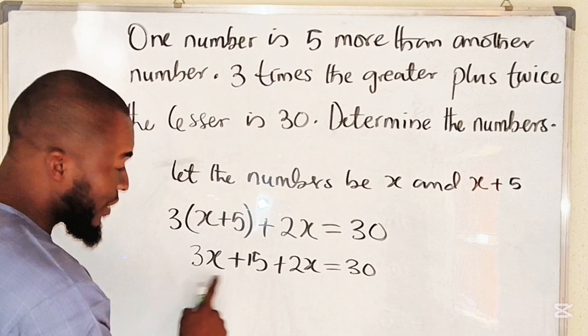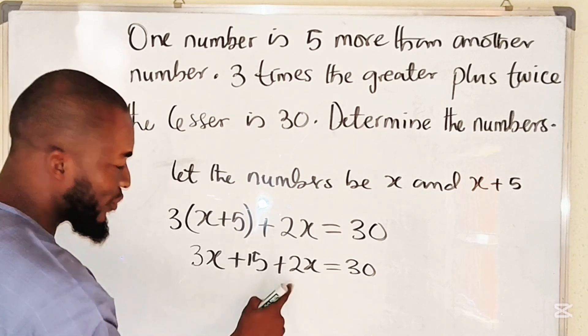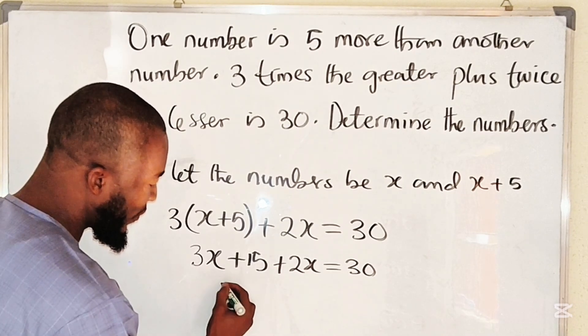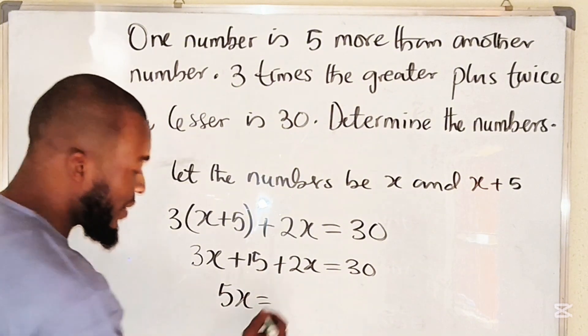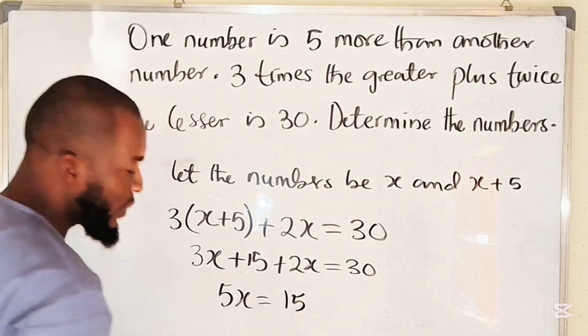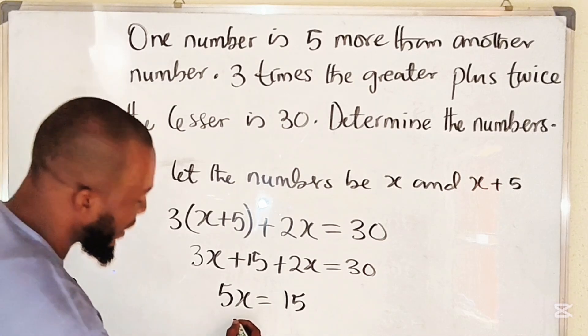Right, we can take 15 to the other side and add these two terms together. 3x plus 2x will give us 5x. This is equal to 30 minus 15, which is 15. So we divide both sides by 5, and x, which is the smaller number, will be 3.